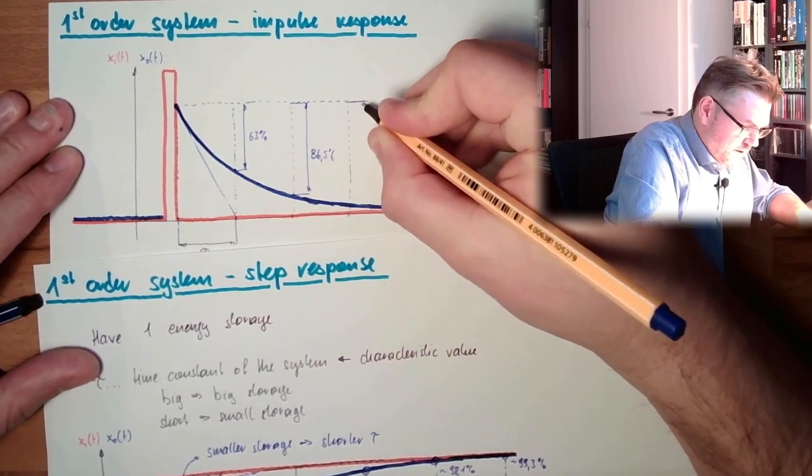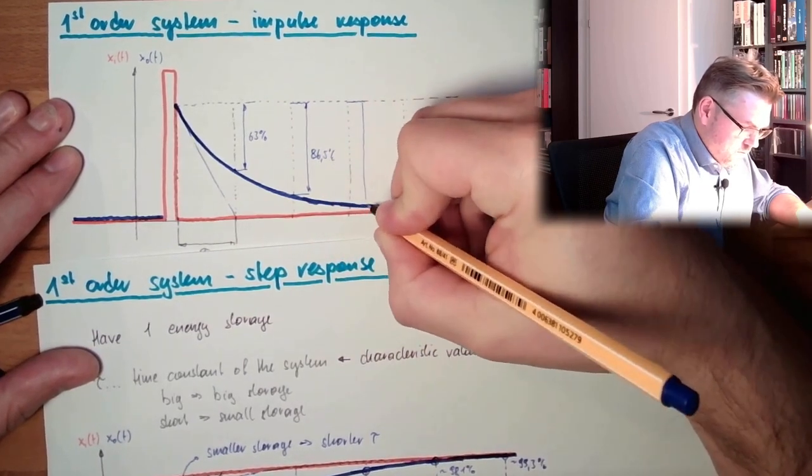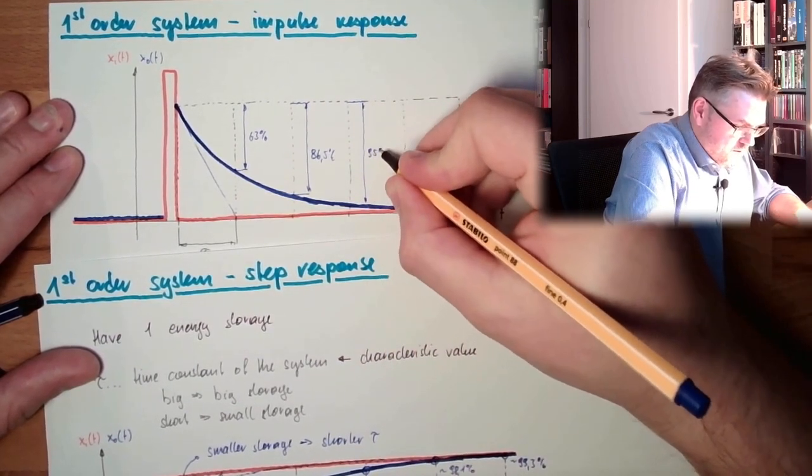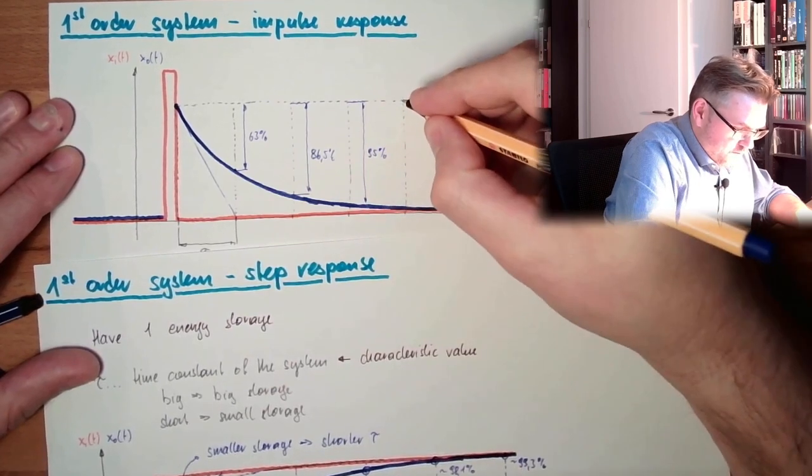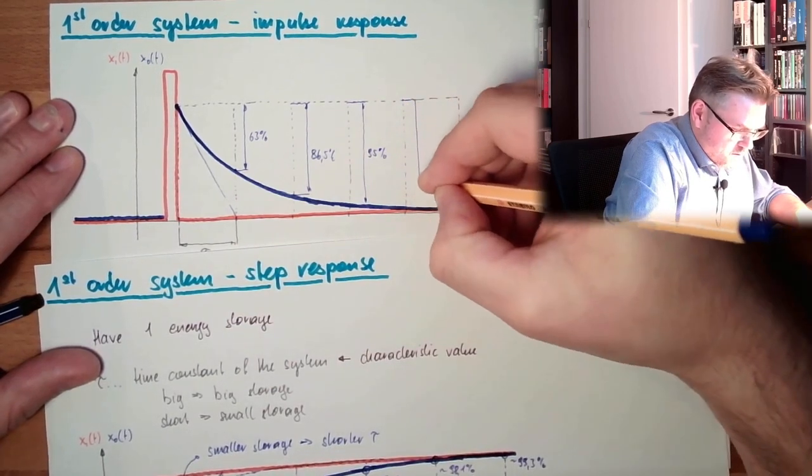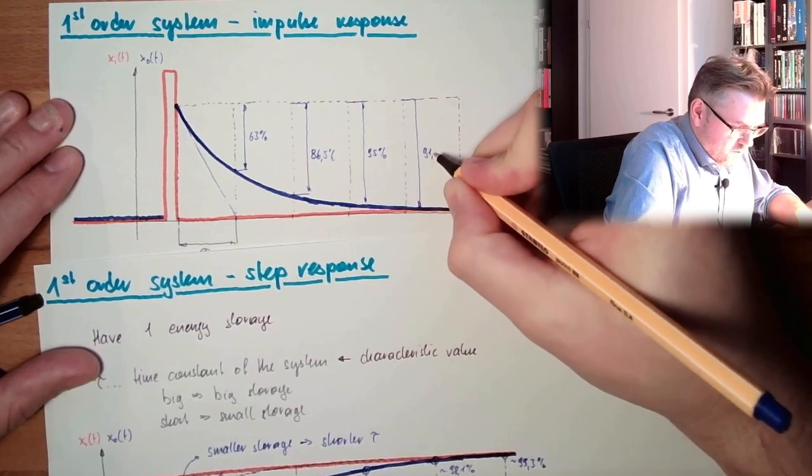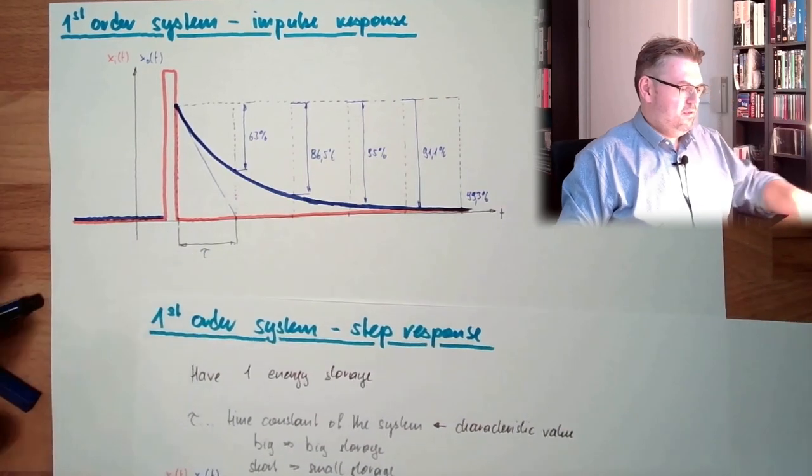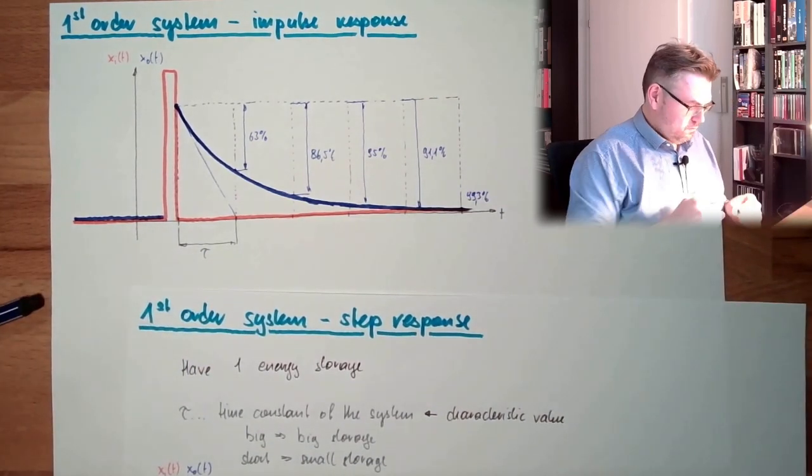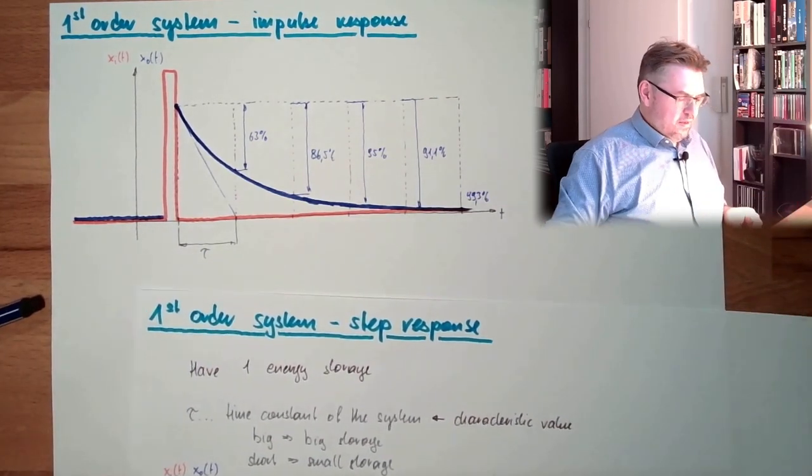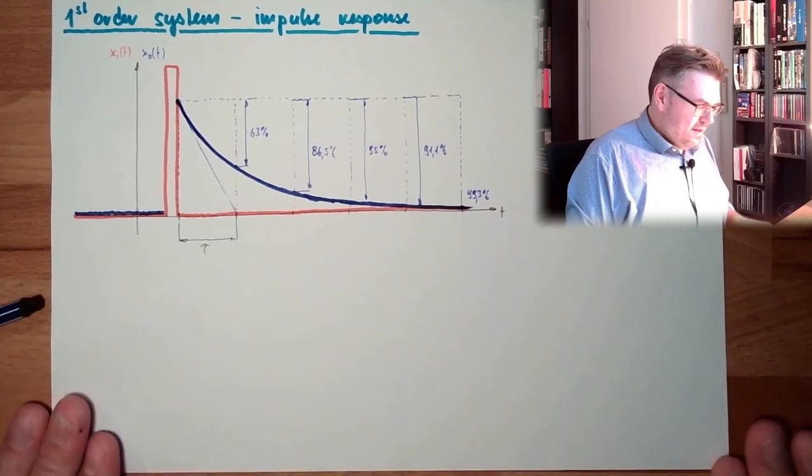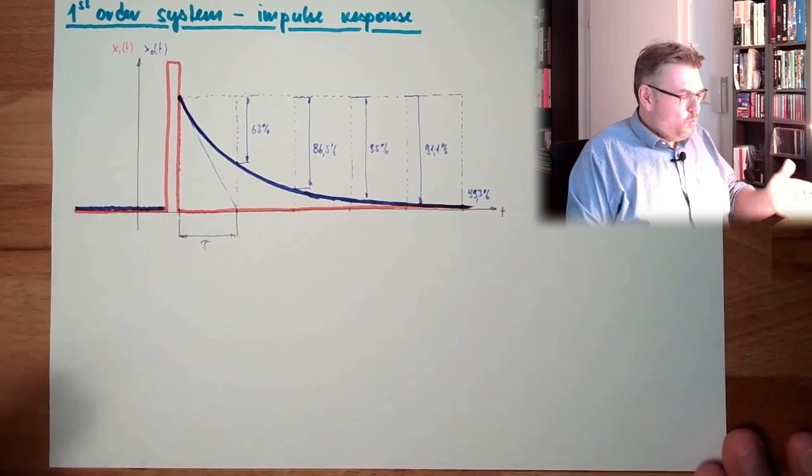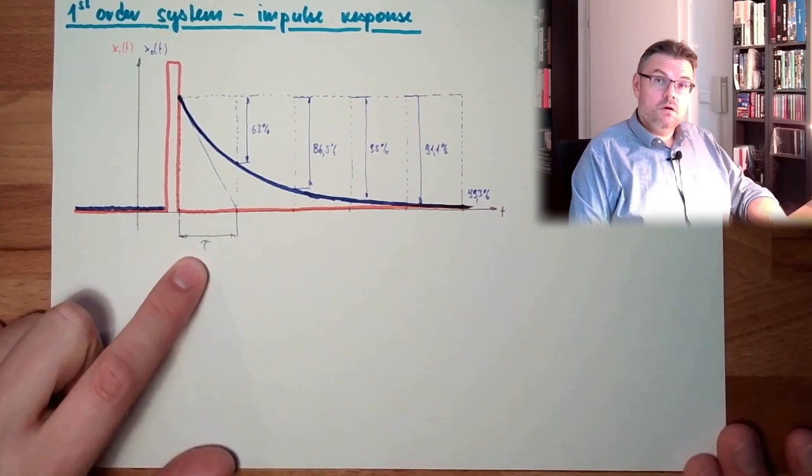Here after 3 tau, 95 percent. Here 98.1 percent. And here we have this 99.3 percent. It's obvious, we again have the characteristic value, it is tau. And the longer tau is, the longer it will take to get down to zero again.